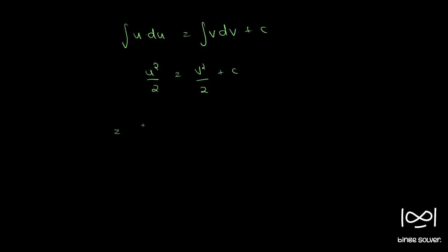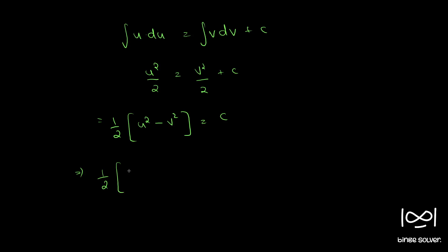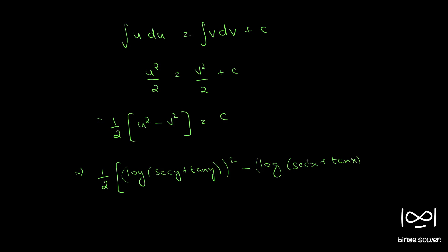Or we get (1/2)(u² − v²) = c. Substituting back, u is log(sec y + tan y) and v is log(sec x + tan x), so we have: (1/2)[log(sec y + tan y)² − log(sec x + tan x)²] = c.